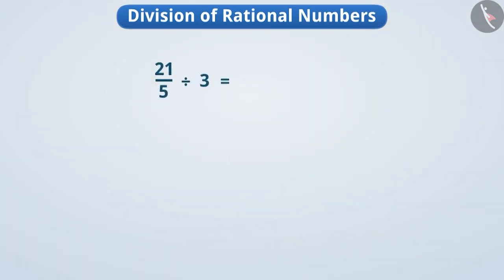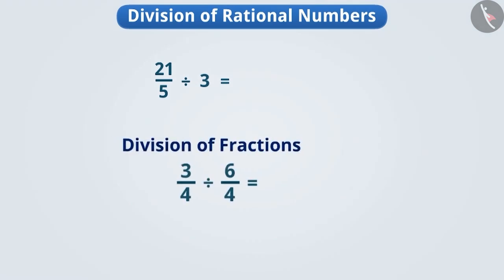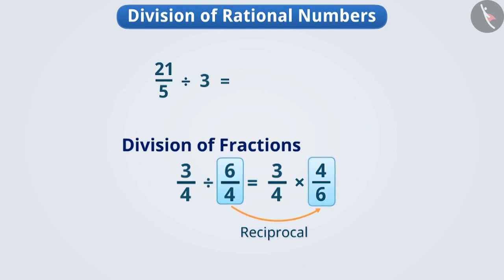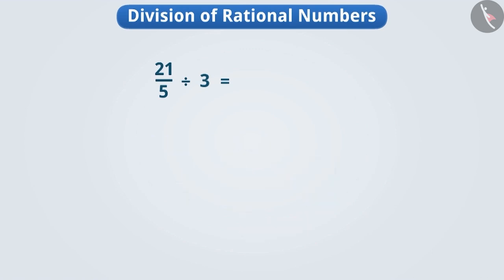The division of rational numbers is done in the same way as division of fractions. That is, the first number is kept exactly the same and is multiplied by the reciprocal of the second number. To get the reciprocal of a number, we interchange its numerator and denominator. Three can be written as three by one, and its reciprocal is one by three.